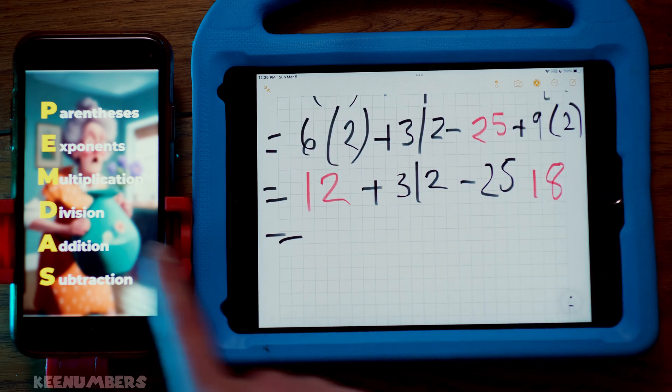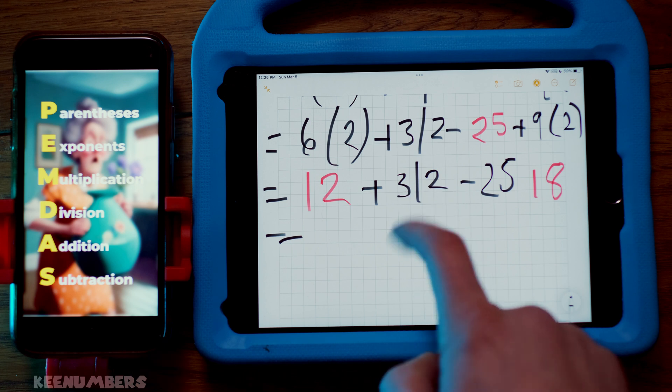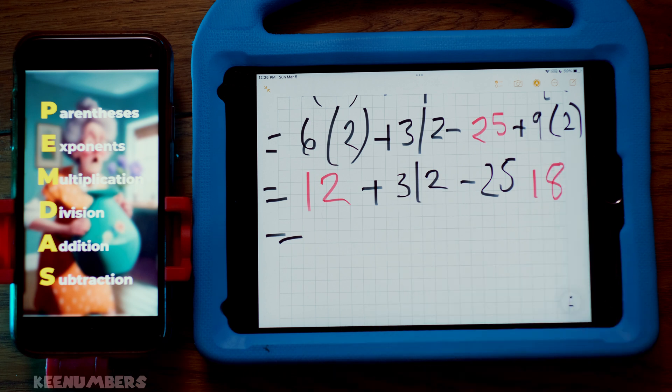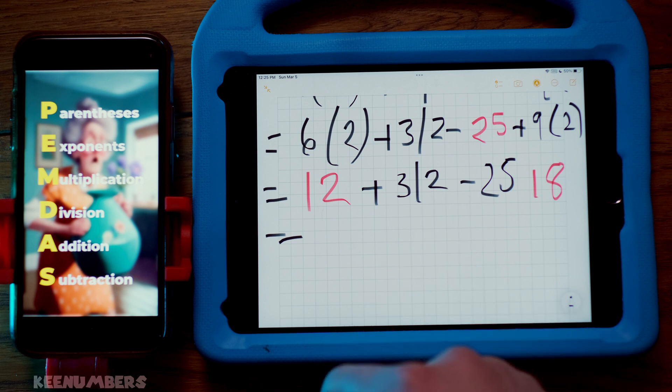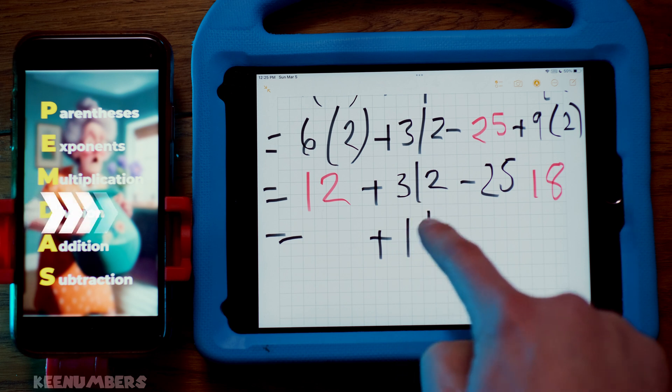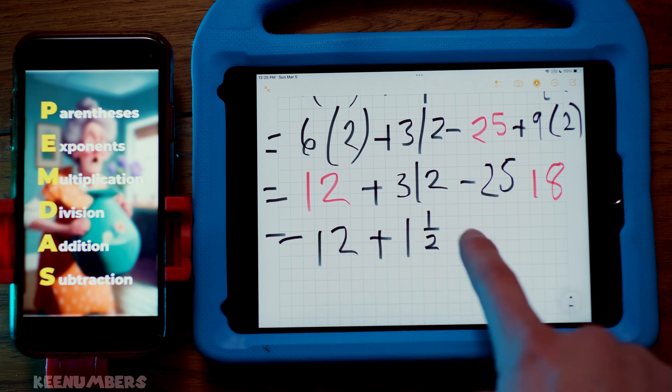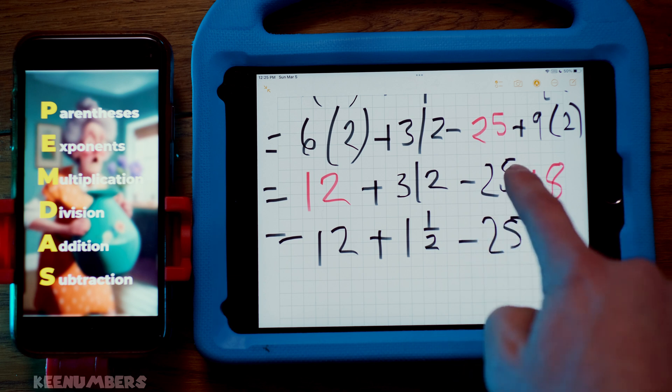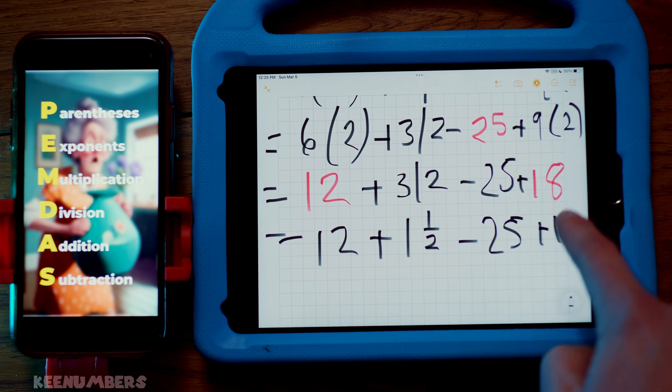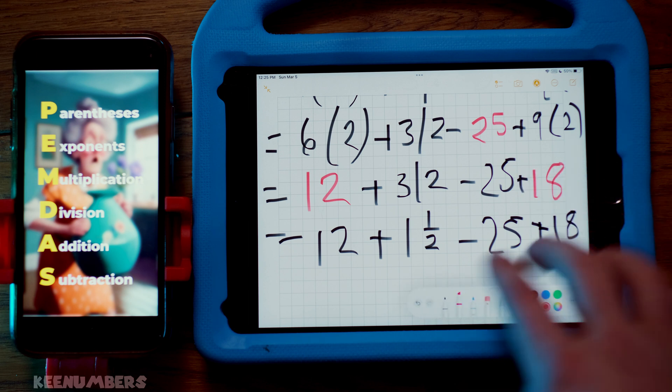And then you're gonna go. And you're gonna do your division. D for division. Three divided by two. That's just 1.5. We can leave it that way as 1.5. Or we can just say three divided by two, three halves. That's okay. You can also write it as one and one half. That's okay. However you want to do it. 12 minus 25 plus 18. That was a typo over there. Don't forget your plus signs.